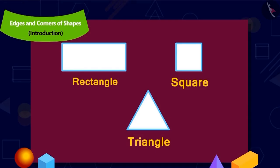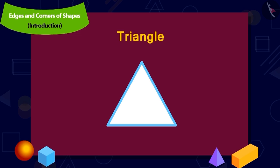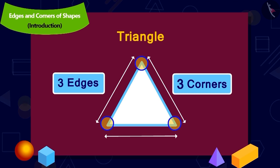Now, Uncle asked Chanda to recognize the objects with three edges and three corners. Do you recognize this shape? Absolutely right. Triangle. Triangle has three edges and three corners.